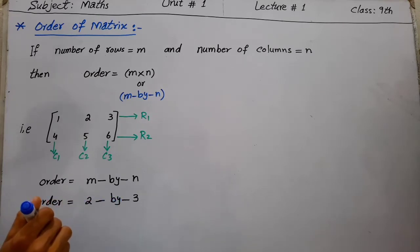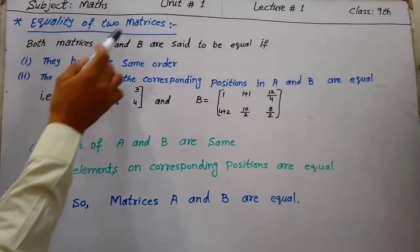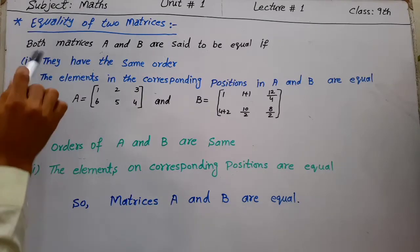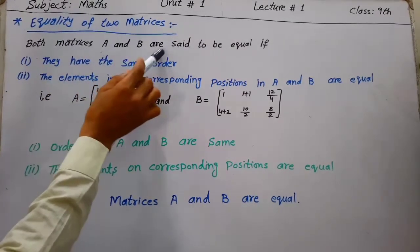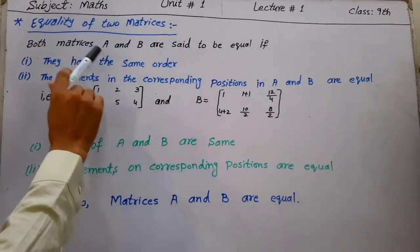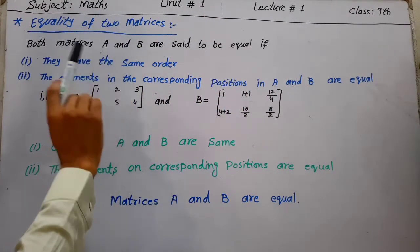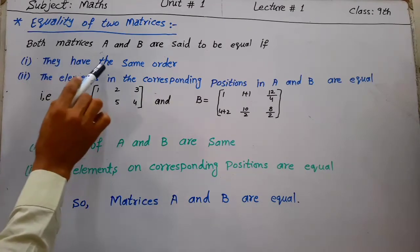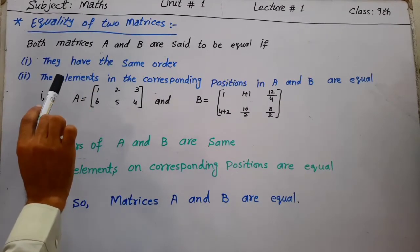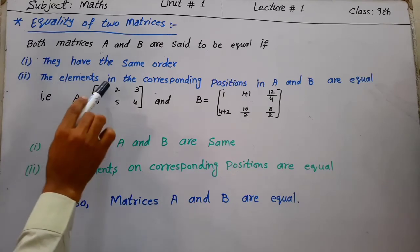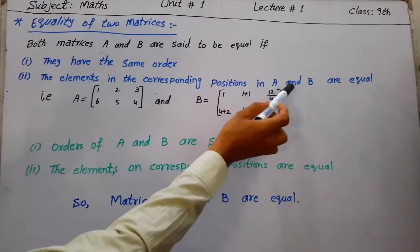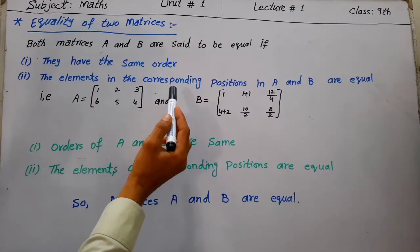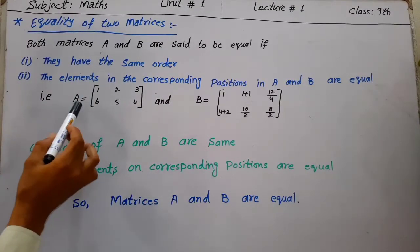Equality of two matrices: Both matrices A and B are said to be equal if two conditions are satisfied. First, they have the same order. Second, the elements in the corresponding positions in A and B are equal.